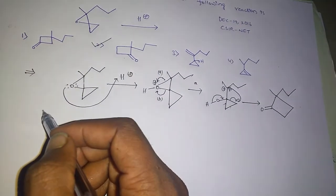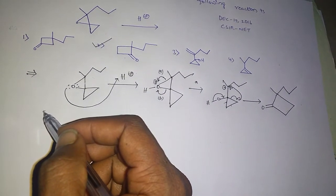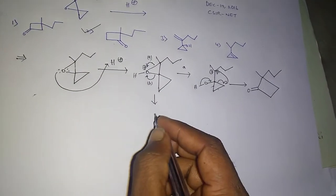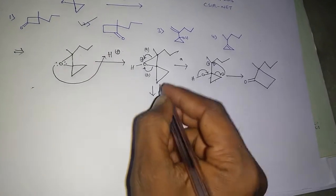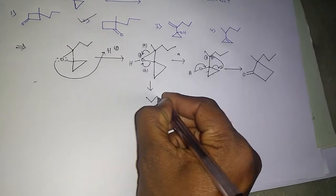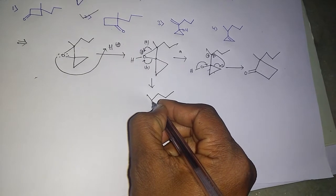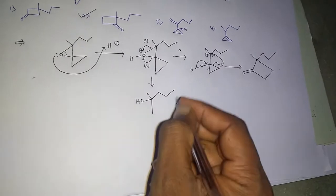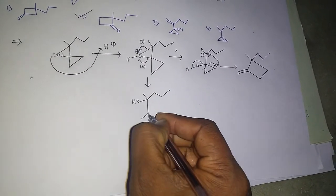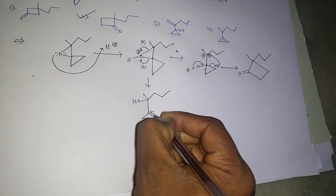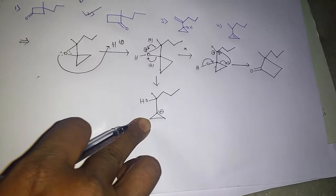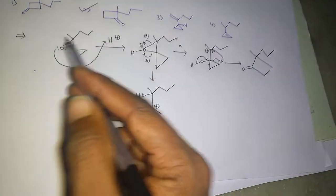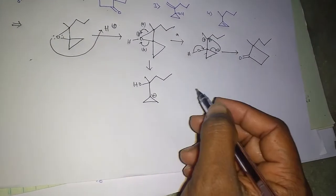If you go for option B, what happens? So here is the positive charge on it. This should be there in the given products.